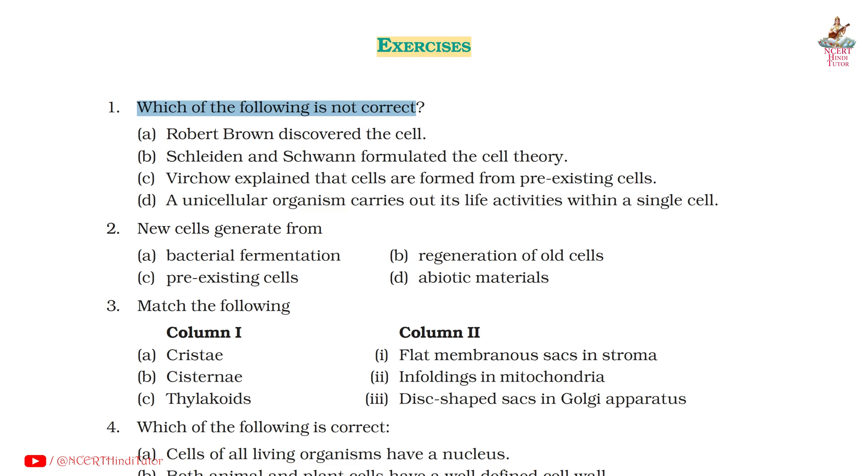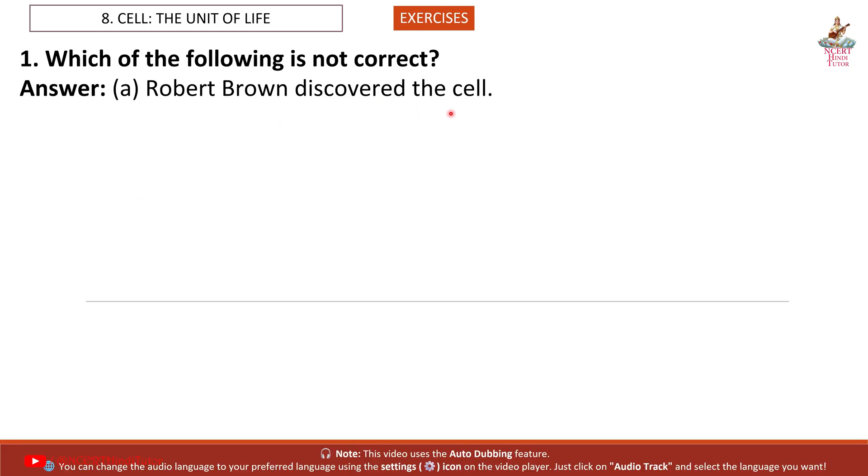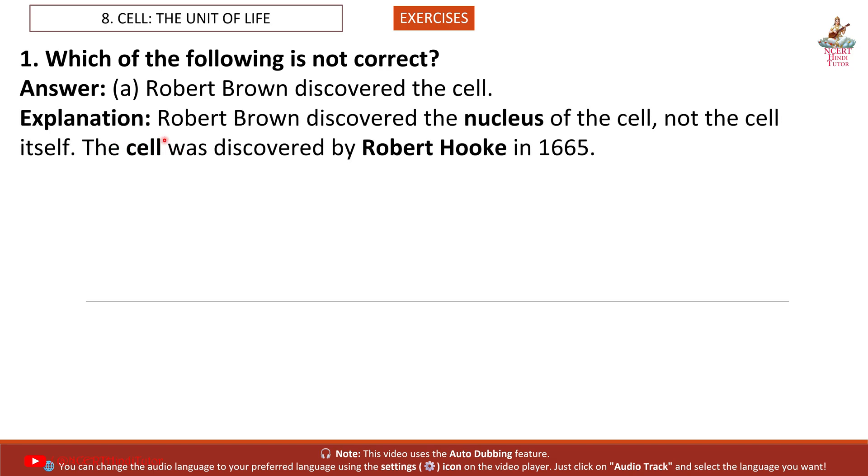Question 1: Which of the following is not correct? Answer: A. Robert Brown discovered the cell. Explanation: Robert Brown discovered the nucleus of the cell, not the cell itself. The cell was discovered by Robert Hooke in 1665.